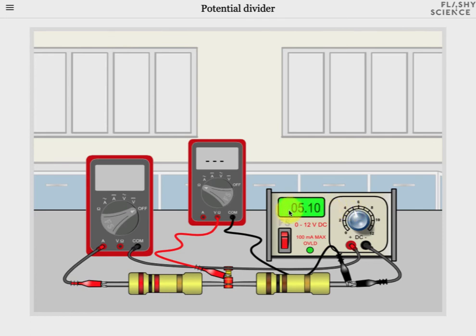We can again use the right-hand DMM to measure the potential difference. So click and drag the dial to this symbol, which means DC volts. Currently, we're measuring the potential difference across the right-hand resistor. If we move the position of the red crocodile clip, we can measure the potential difference across both resistors in series, which is, of course, the same as the value of the power supply output.